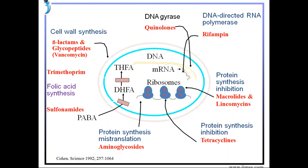This picture depicts the various antibiotics that act at various levels of the bacterial cell. For example, beta-lactams and glycopeptides act on cell wall synthesis. When a bacterium encounters these antibiotics, they act on the cell wall, thereby killing the bacteria.